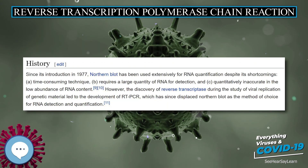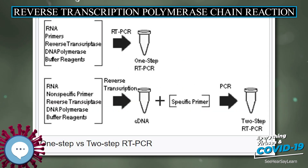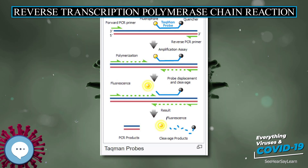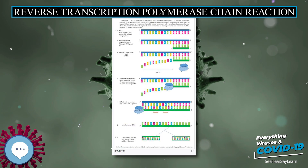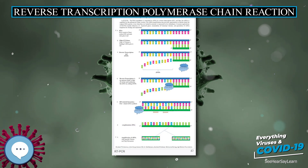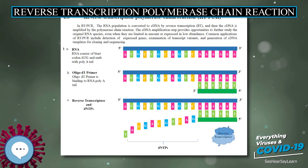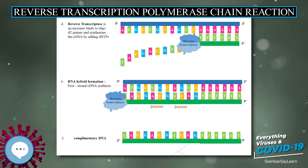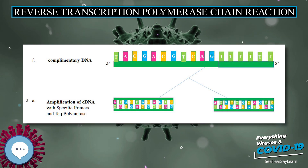Multiplex probes — TaqMan probes, molecular beacons, and scorpions — allow the concurrent measurement of PCR products in a single tube. This is possible because each different fluorescent dye can be associated with a specific emission spectra. The use of multiplex probes saves time and effort without compromising test utility, and its application in areas such as gene deletion analysis, mutation and polymorphism analysis, quantitative analysis, and RNA detection make it an invaluable technique for laboratories of many disciplines.